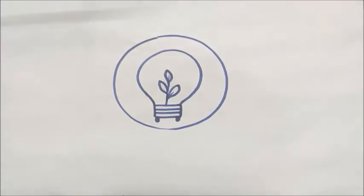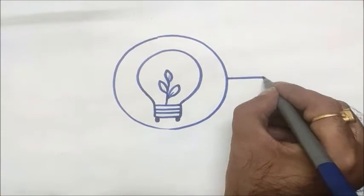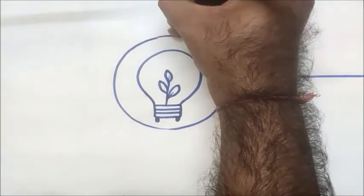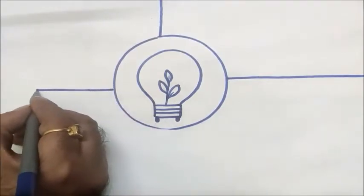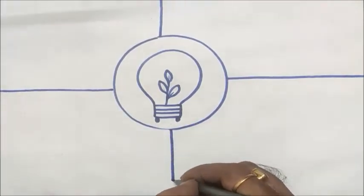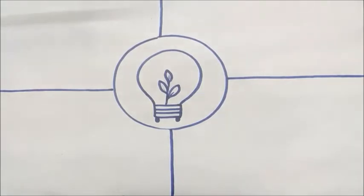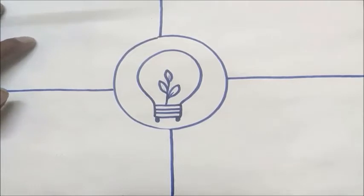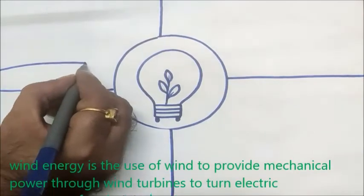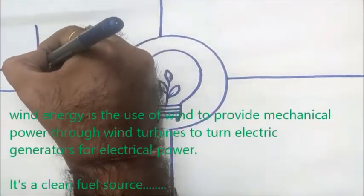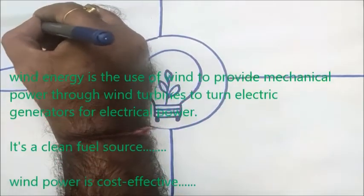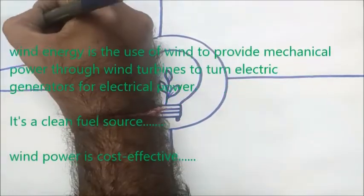Now I am dividing this into four steps. At the first step I am going to make wind energy. For that, one curve and poles and few turbines on it.